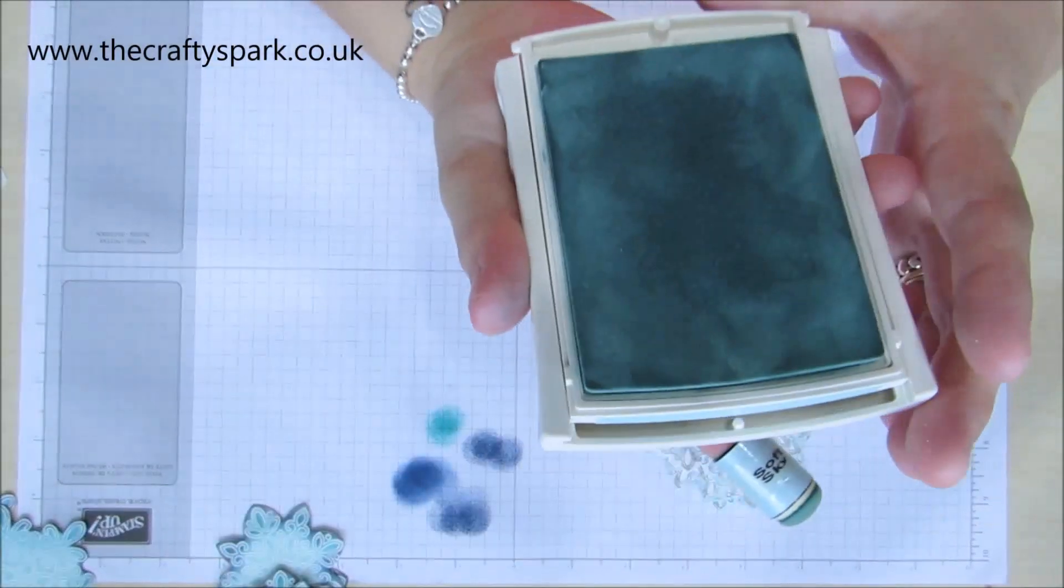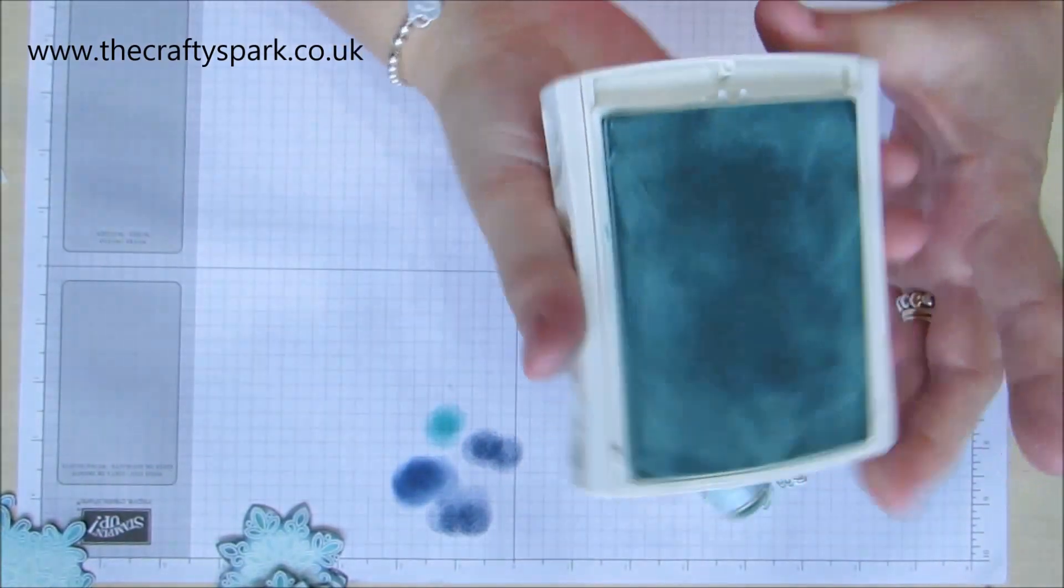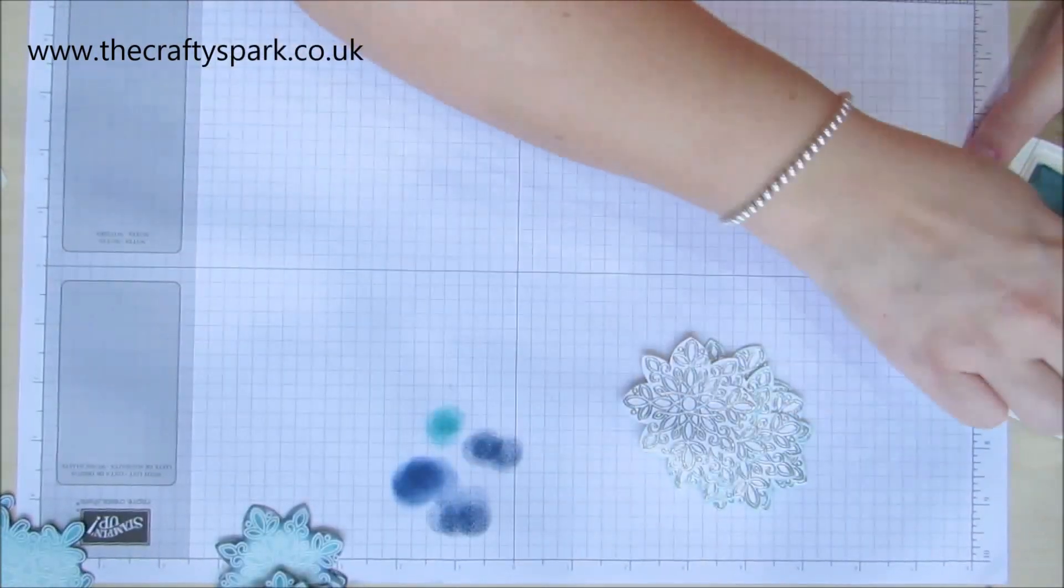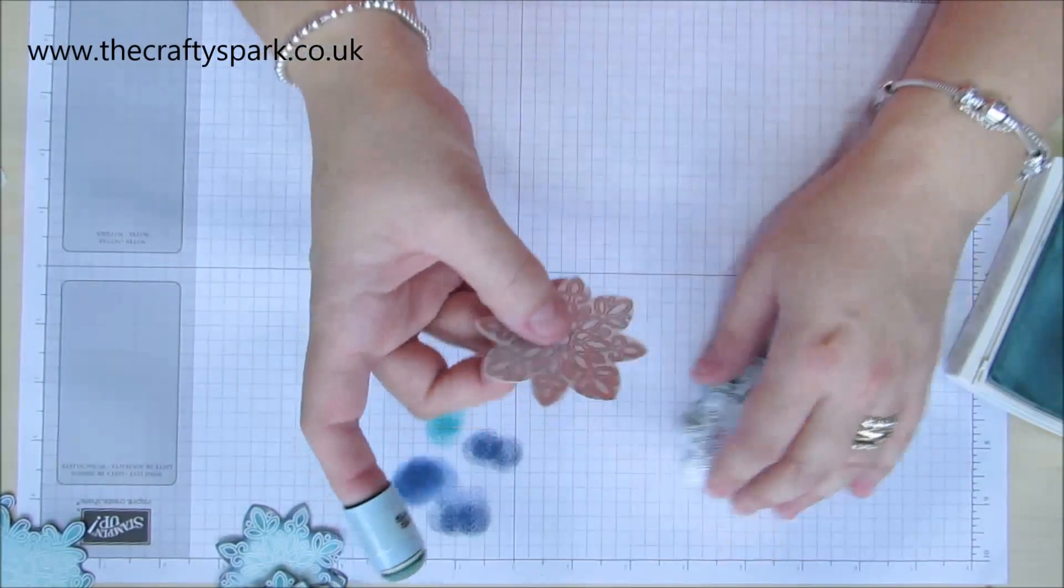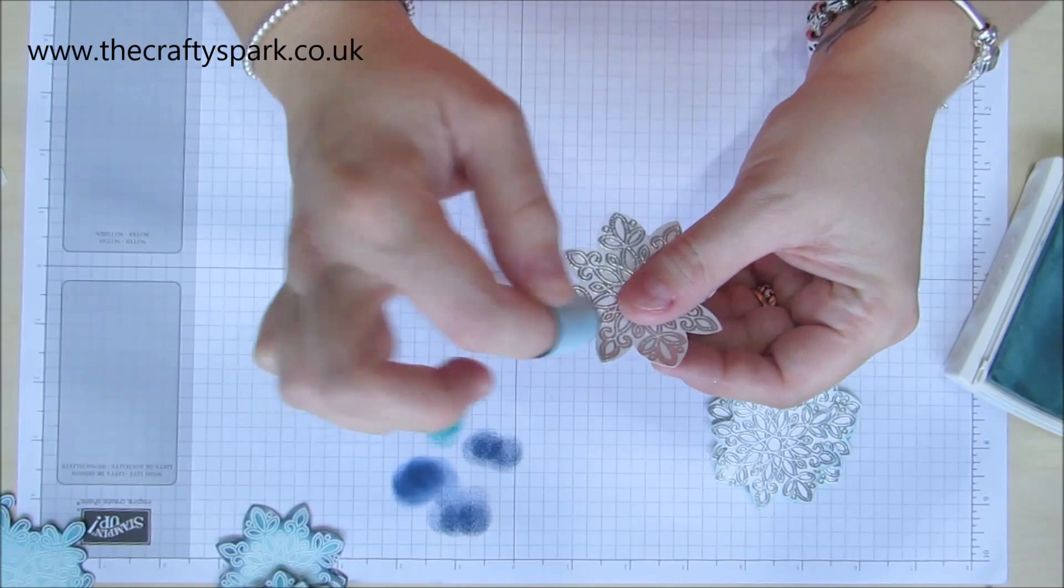So you can see that one as well. Now this is soft sky, so again, let's get a bit of ink on our little dauber and just brush around the edge.